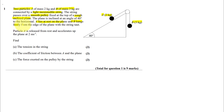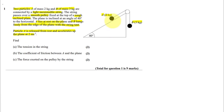Particle A lies at rest on the plane and B hangs freely from the edge of the plane with the string taut. Particle A is released from rest and accelerates up the plane at 2 metres per second squared. Since A is going up the plane, friction is going to be acting against it — so friction acts downward along the plane.